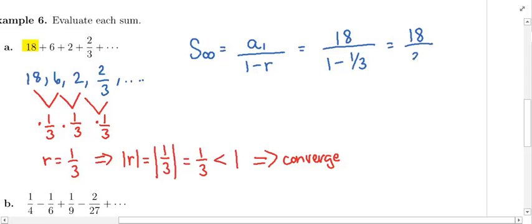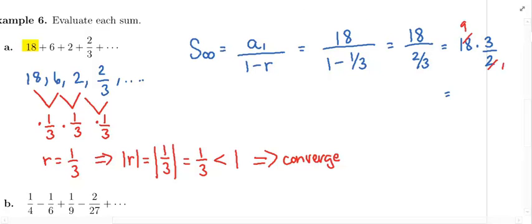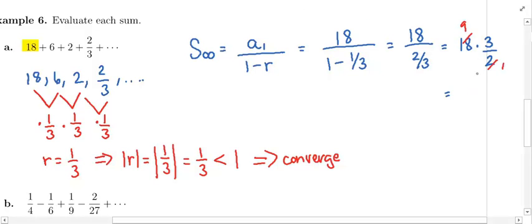This is 18 over 2/3. To divide by a fraction, change the division to multiplication and flip the bottom fraction. 2 goes into 2 once and 2 goes into 18 nine times, so this gives us 27. That's the answer.